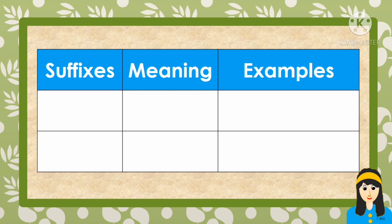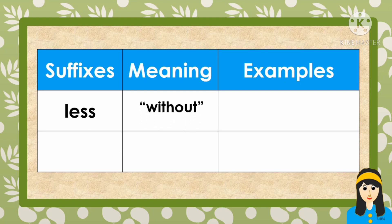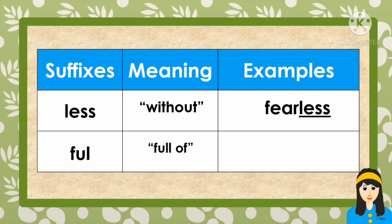Another example for suffixes. First one is less. The meaning of less is without, and the example word is fearless. Second one is ful. The meaning of ful is full of, and the example word is joyful.